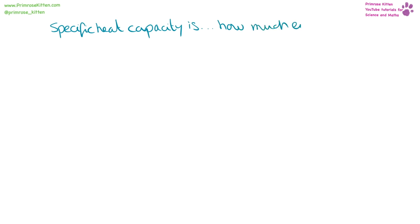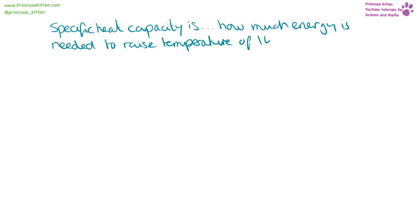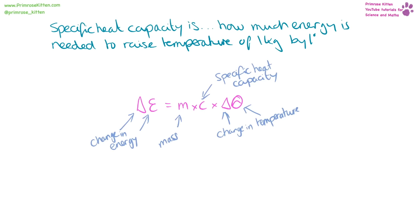Specific heat capacity is how much energy is needed to raise the temperature of one kilogram of a substance by one degree. The equation is: change in energy equals mass times specific heat capacity times change in temperature. Specific heat capacity is particular to whatever substance they are talking about, and they would tell you this in the exam. Units: energy in joules, mass in kilograms, change in temperature in degrees C, and specific heat capacity in joules per kilogram degrees C.